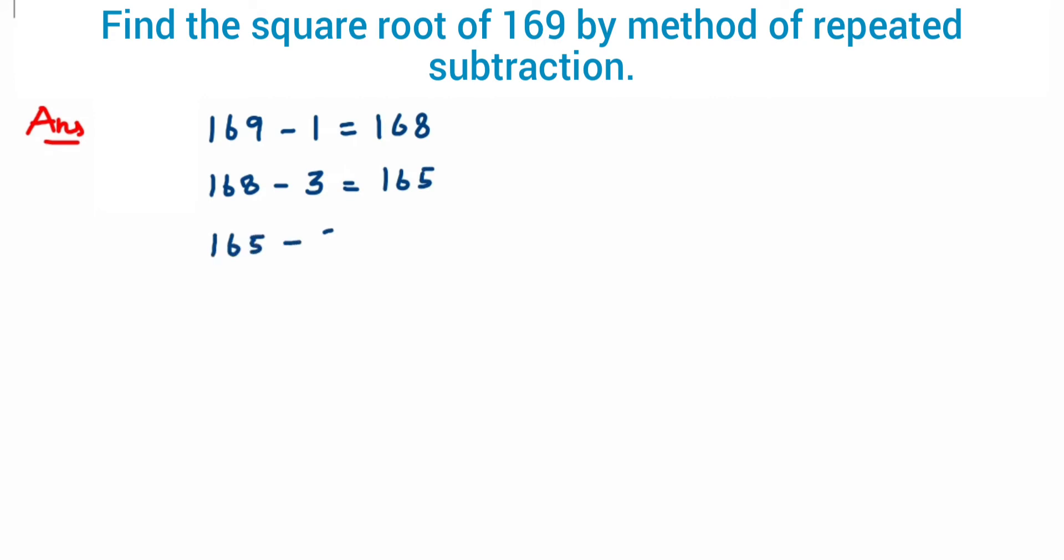So we got 168 minus 3 equals 165. Next odd is 5, so 165 minus 5 is 160. Again 160 minus 7 will be 153. Now I subtract 153 with 9. So we have to keep on subtracting till we get 0 as the answer. So 153 minus 9 is 144.